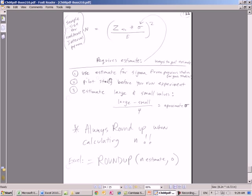How do we get that sigma? We could use an estimate from previous studies or government studies, do a pilot study before you run the experiment, or even estimate large and small values and divide by 4. This is an approximate. Also when we're doing this, we're always going to round up when calculating n. We'll use ROUNDUP with 0 to round up to the integer.